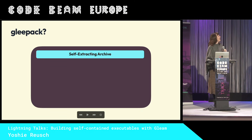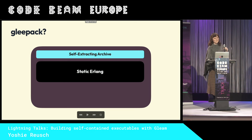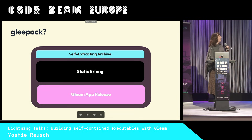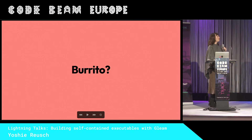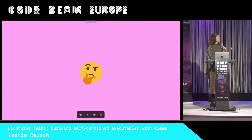But wait — can we now make a little wrapper script, put our Erlang runtime there, and then put an OTP release at the end? Now we have self-extracting static binaries. And if you're using Elixir, this might sound familiar to you — and it kind of is — but can we do better?